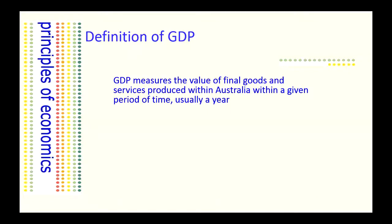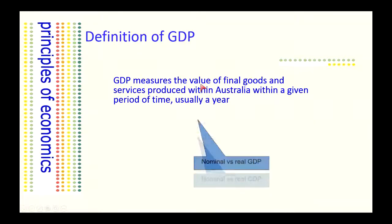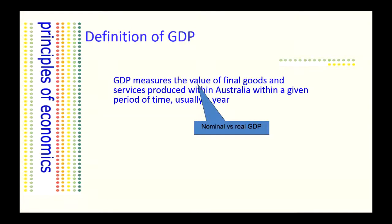Let's look at some of these words and get a clearer view of what this definition actually means. GDP measures the value. What do we mean by value? Economists classify GDP in two ways: nominal GDP, that is GDP at current market prices, or real GDP, where GDP is valued at some base price — normally prices as they exist in a given year. This enables us to remove the impact of inflation on that valuation.